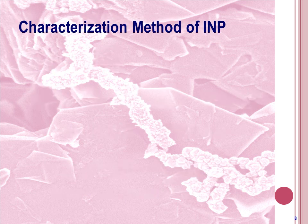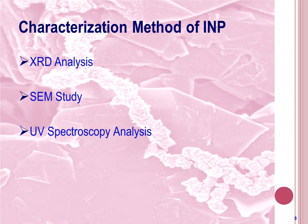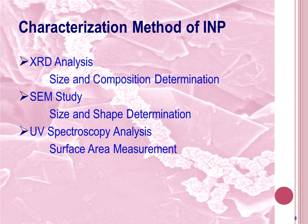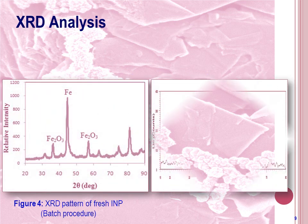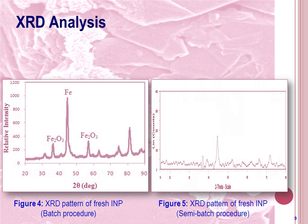After preparation of INP, let's come to the characterization methods of these prepared particles. Iron nanoparticles were characterized by three methods: XRD analysis, AFM study, and UV spectroscopy analysis. In XRD analysis, the size and composition of the particle were determined. In AFM study, the size and shape of the particle were determined. In UV spectroscopy analysis, the surface area of the particle was measured. XRD analysis was performed for INP produced by both batch and semi-batch procedures.